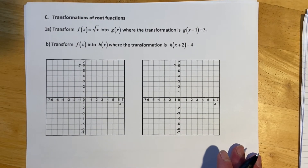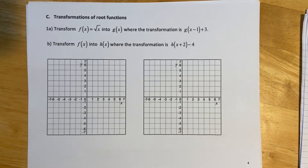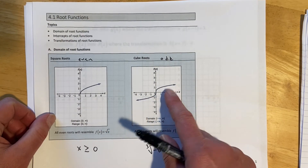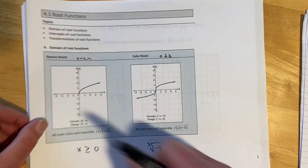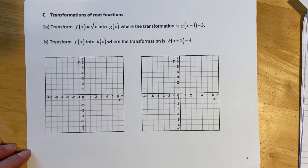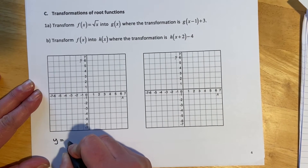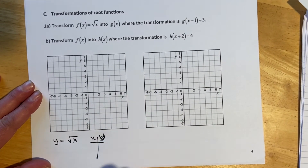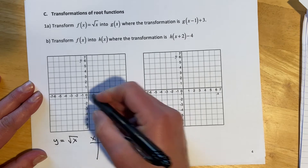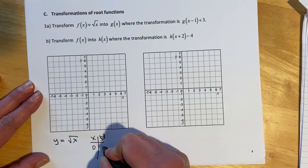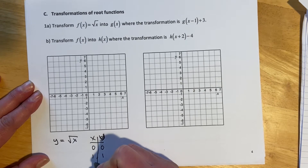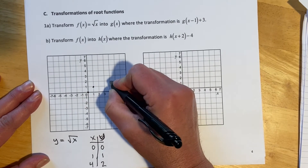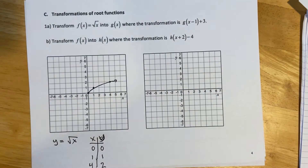The next step is transformations of root functions. First we need to get a hold of what our parent functions look like — our square root and our cube root. We won't do a lot of cube roots because they're hard to draw. To get the parent function for square root, y equals square root of x: if x is 0, y is 0; square root of 1 is 1; skip 2 and 3 because those are hard; square root of 4 is 2. That's our parent function for all these root problems — this is always where we're starting from.